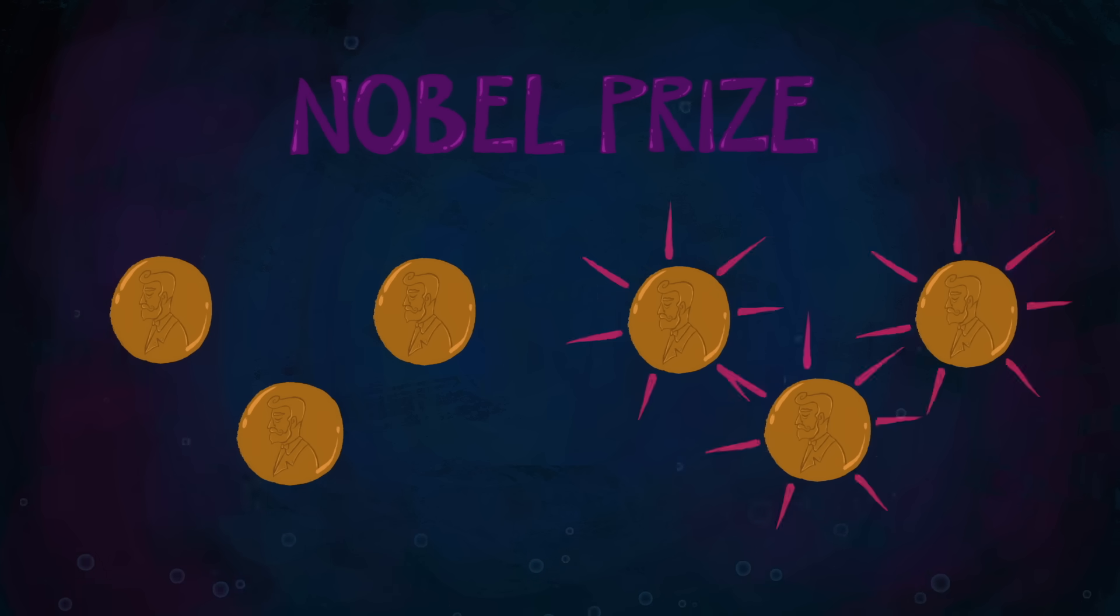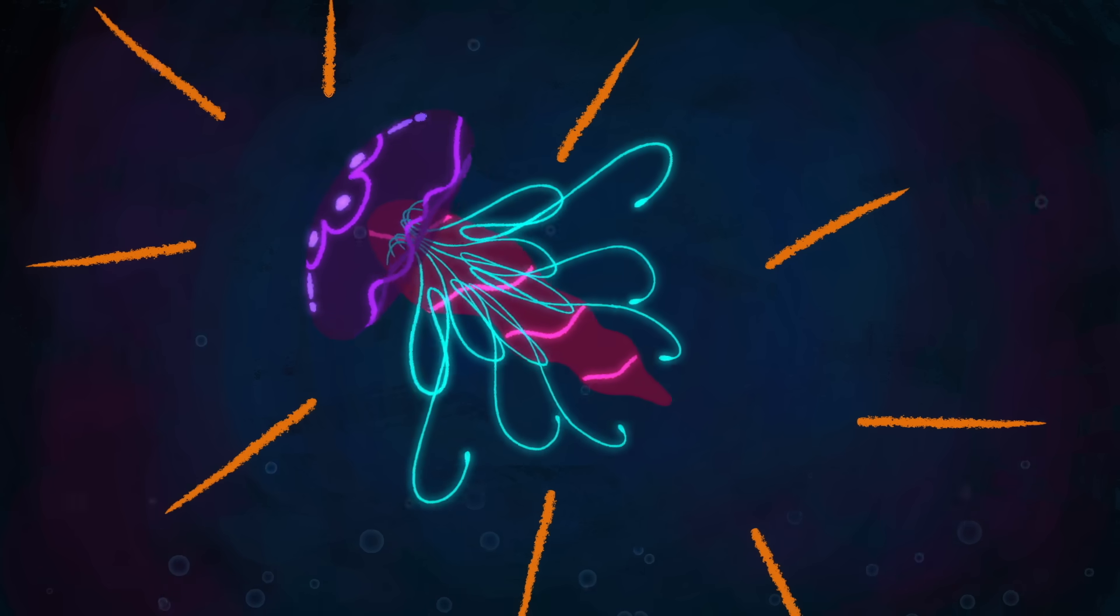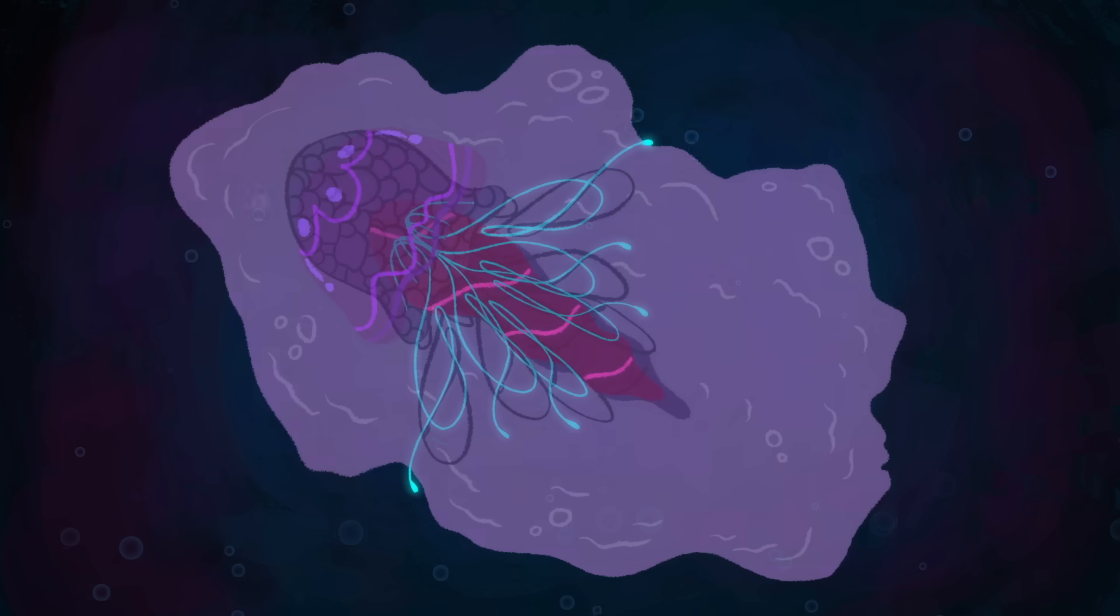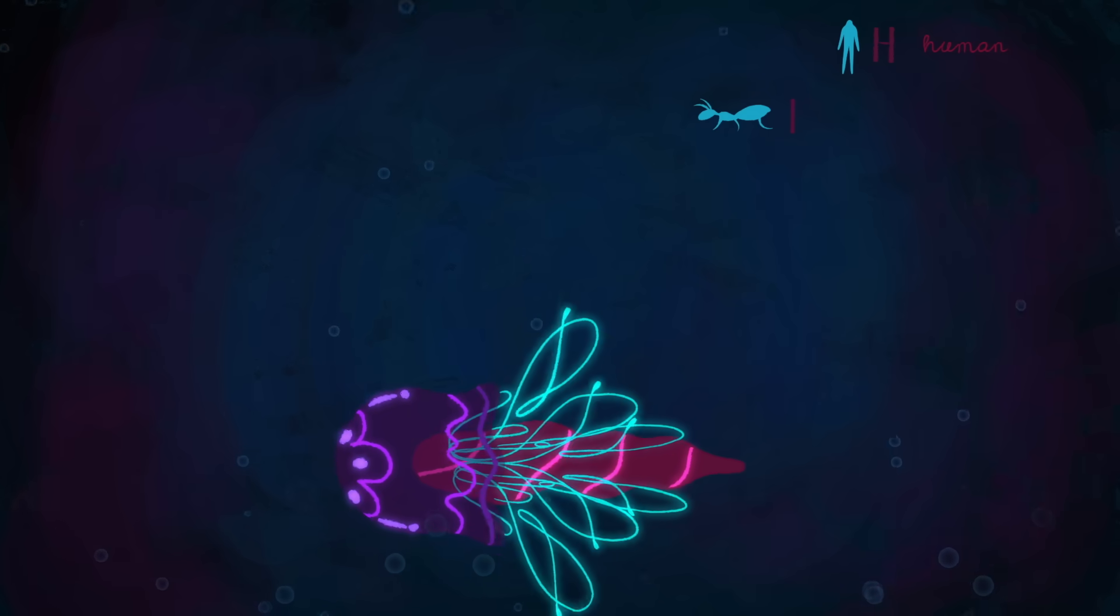But it's jellyfish who may be the most successful organisms on Earth. Ancient fossils prove that jellyfish have inhabited the seas for at least 500 million years, and maybe go back over 700 million. That's longer than any other multi-organ animal.